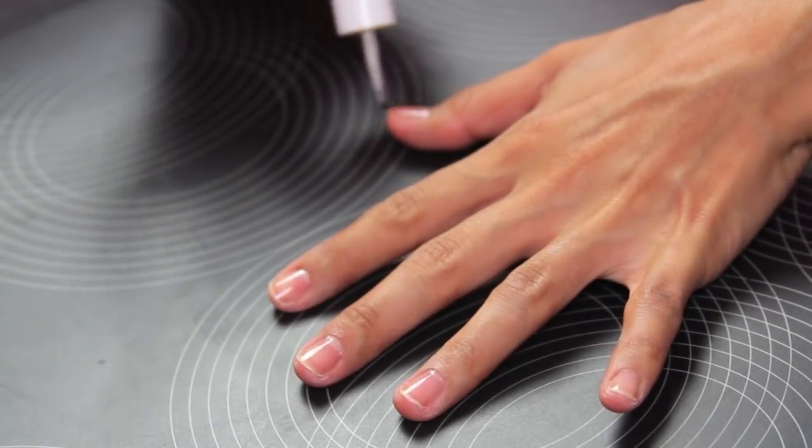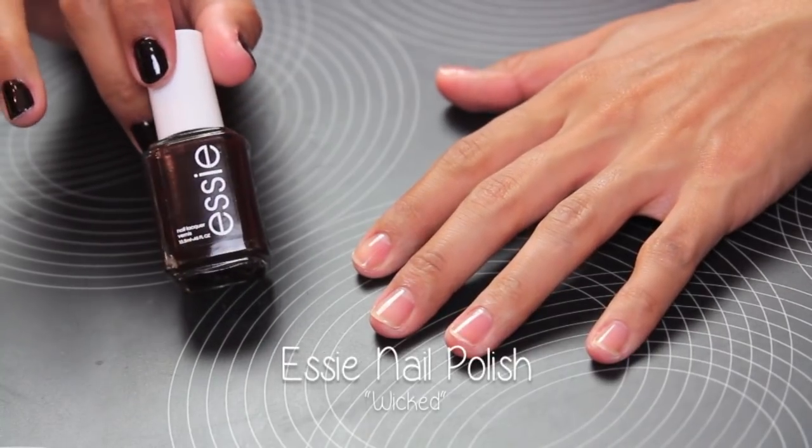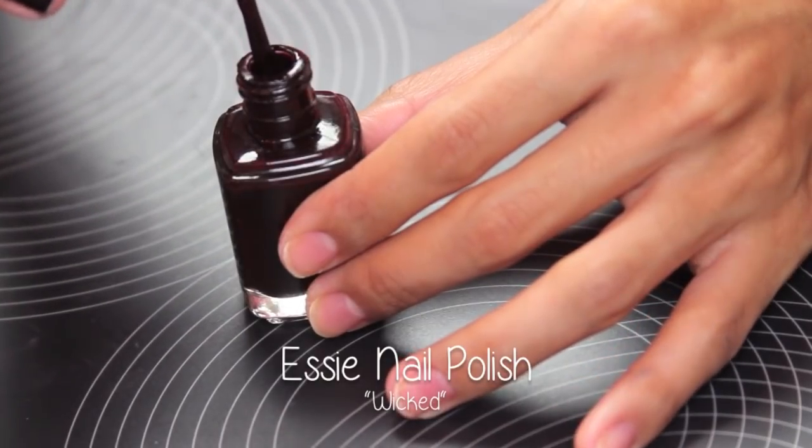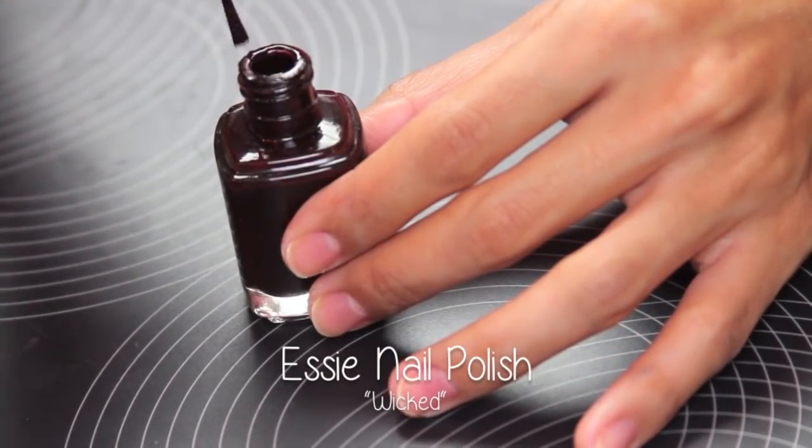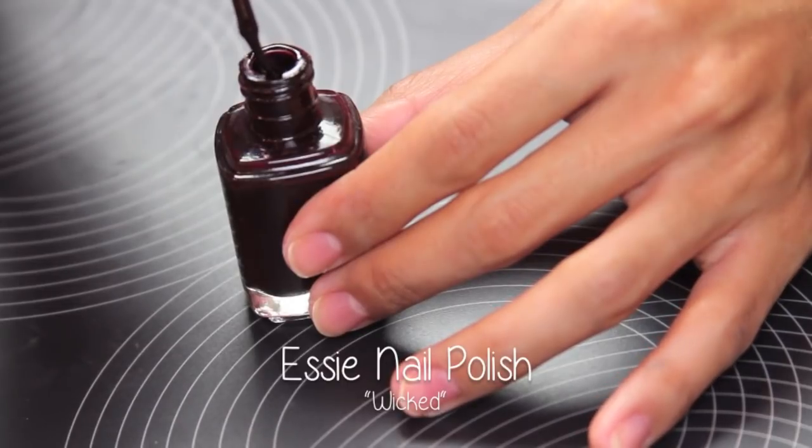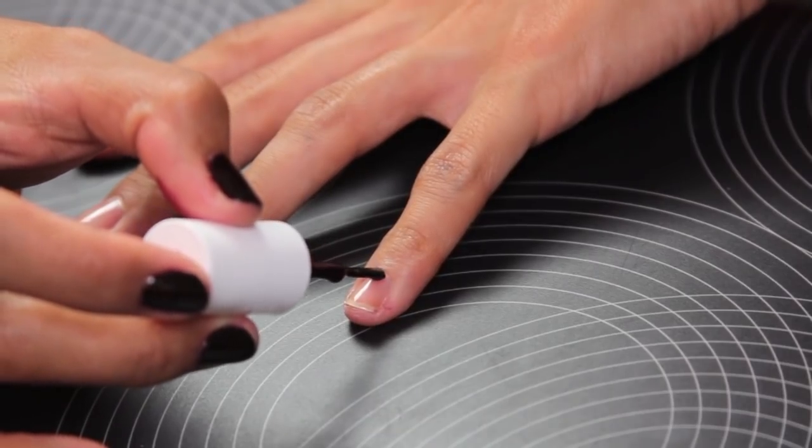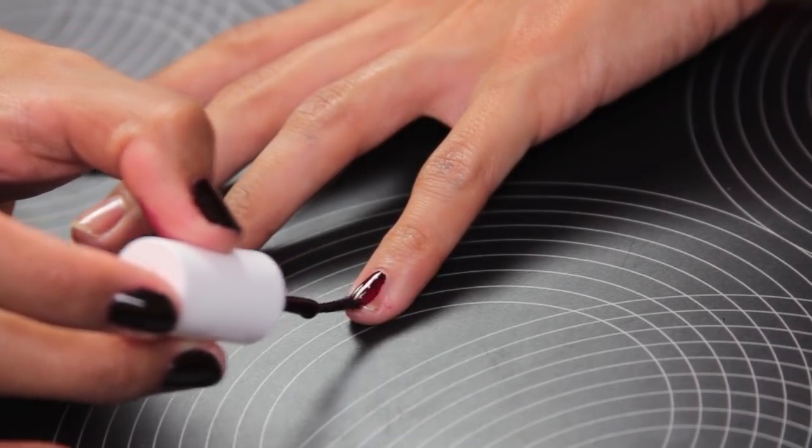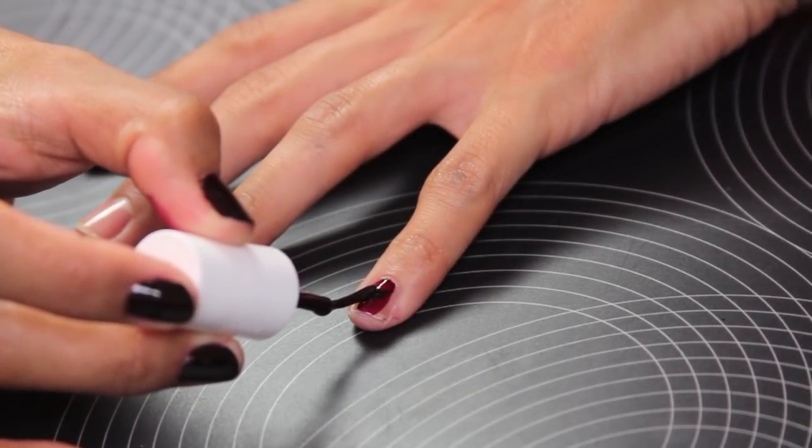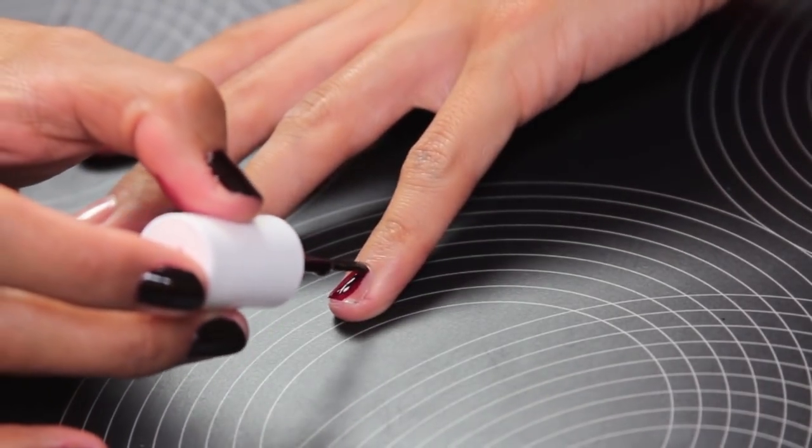Now the nail polish that I've been loving is called Wicked. It's from Essie and it's this really dark sort of burgundy color, almost black if you do two coats. It's beautiful—I love it for fall.